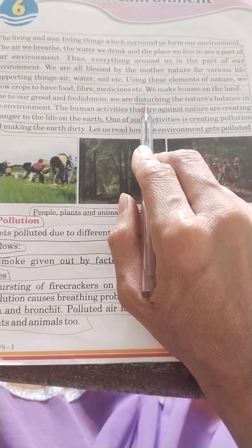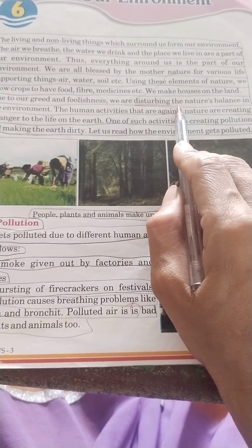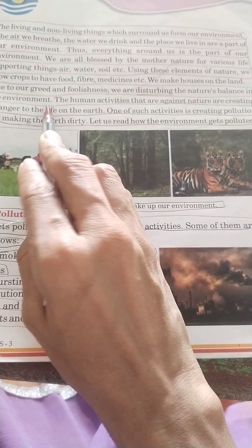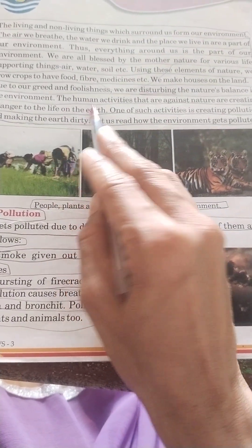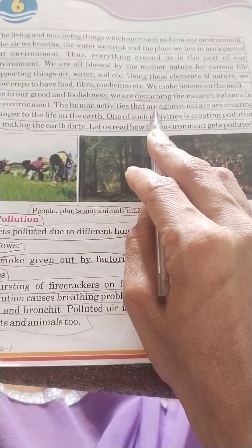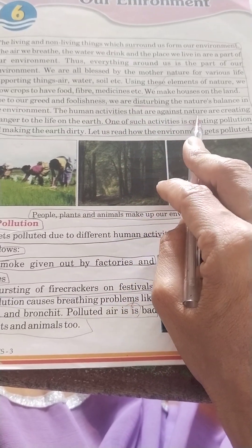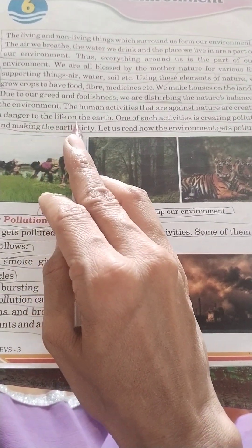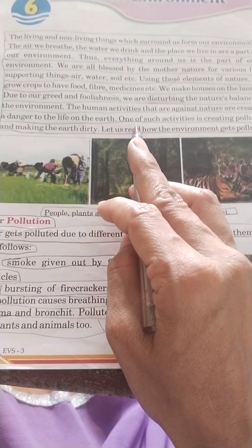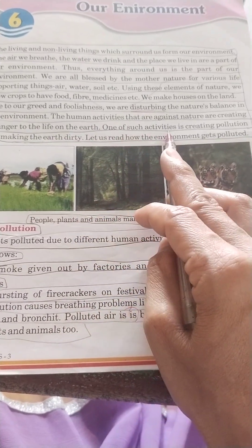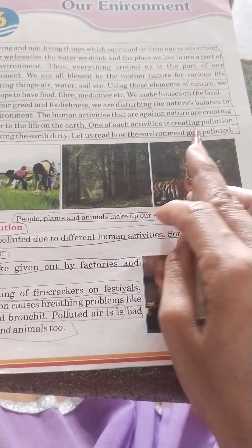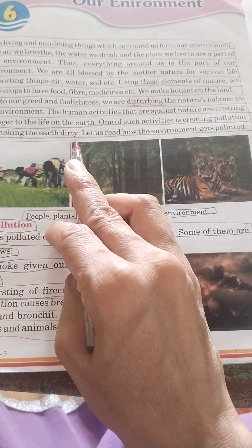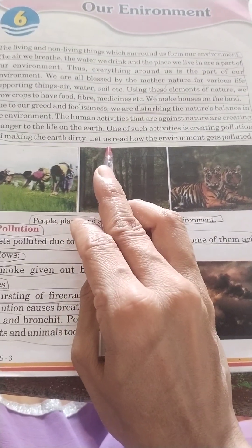Due to our greed and foolishness, we are disturbing the nature's balance in the environment. The human activities that are against nature are creating a danger to the life on the earth. One of such activities is creating pollution and making the earth dirty.